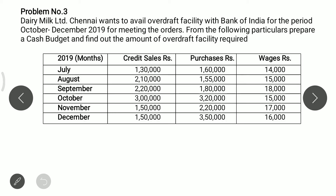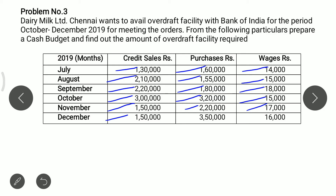Information: For the month of July 2019, credit sales 1,30,000, purchases 1,60,000, wages 14,000. For August 2019, credit sales 2,10,000, purchases 1,55,000, wages 15,000. For September 2019, credit sales 2,20,000, purchases 1,80,000, wages 18,000. For October 2019, credit sales 3,00,000, purchases 3,20,000, wages 15,000. For November 2019, credit sales 1,50,000, purchases 2,20,000, wages 17,000. For December 2019, credit sales 1,50,000, purchases 3,50,000, wages 16,000.